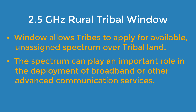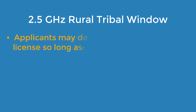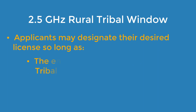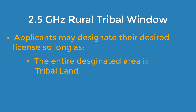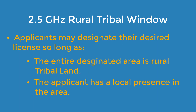The purpose of the 2.5 GHz Rural Tribal Window is to allow federally recognized tribal nations to apply for licenses on rural tribal lands where there is unassigned spectrum available, before the unassigned areas of spectrum are auctioned. Applicants in the priority window may designate their own desired license areas so long as the entire area is rural tribal land and the applicant has the local presence in the area. Rural means an area is not part of an urbanized area or urban cluster area with a population equal to or greater than 50,000.